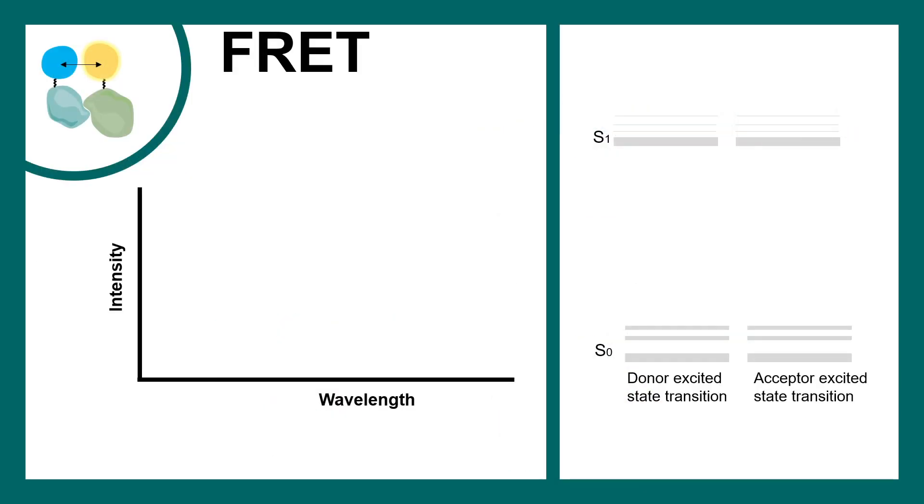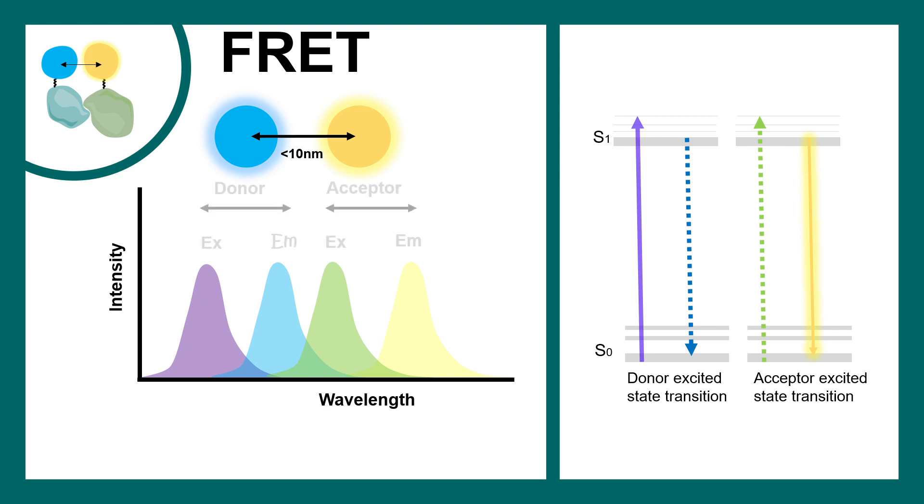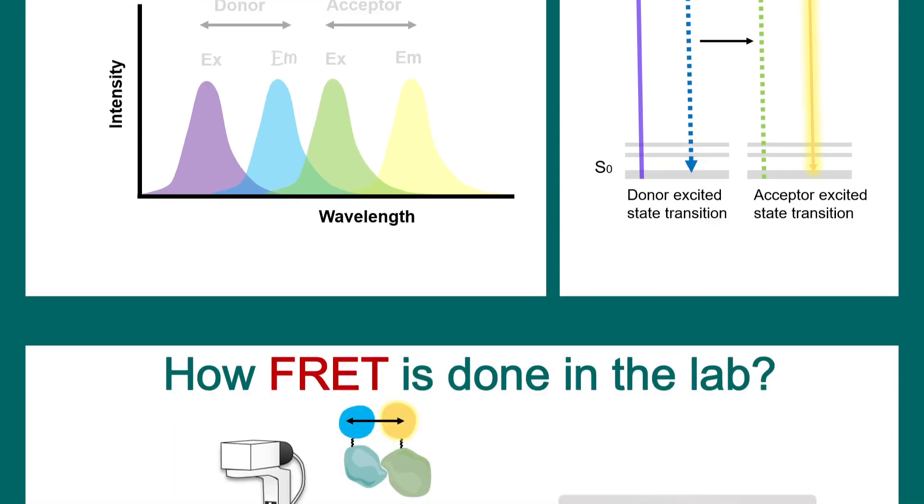Now let's try to understand FRET from a Jablonski diagram perspective and look at their absorption and emission spectra. This is the excitation spectra. The donor is excited with this particular light, and this is how we should expect the donor's fluorescence. This particular fluorescence is now transferred to the acceptor if it is in proximity, and that's why we get the acceptor-excited transition state. This is only possible when there is distance less than 10 nanometers. This energy can be transferred as a function of the distance. We understand in this graph what is the excitation and emission spectra for the donor and acceptor, and they are quite overlapping in this case.